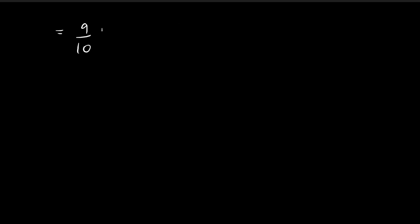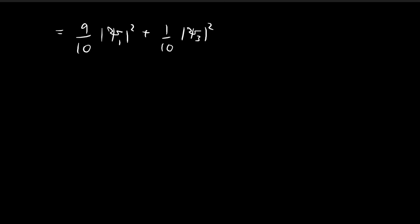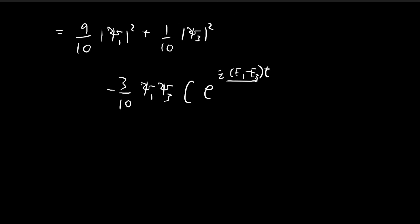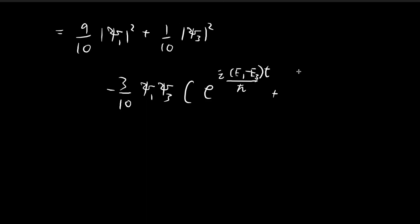We can simplify this a bit. Retaining the 9/10 |ξ₁|² and 1/10 |ξ₃|² terms — noting that ξ₁ and ξ₃ are completely real with no imaginary parts, so the conjugate doesn't affect them — we pull ξ₁ξ₃ outside the bracket. Inside the bracket we get e^(i(E₁−E₃)t/ℏ) and similarly e^(i(E₃−E₁)t/ℏ).